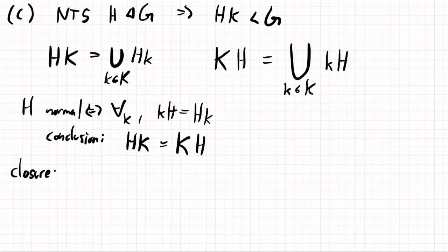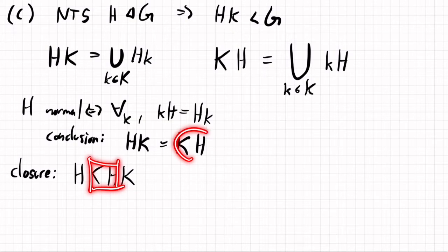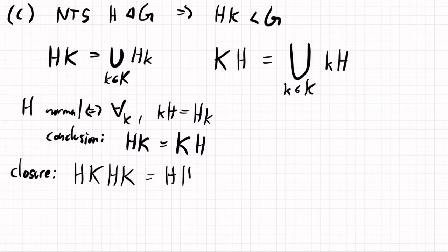So closure, the way closure will work is, we'll take the set HKHK. So any possible product of two elements in HK, we wrote it in the product set notation, we notice this is right here, and that's equal to HHKK, and then this will be equal to H by closure of h, this will be equal to K by closure of k. So that'll be equal to HK. And so that's one way of showing closure.